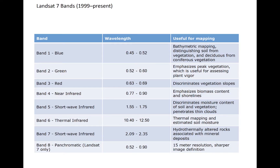Shown are the bands available from Landsat 7, which is also in operation as of 2020. It consists of three visible bands, a near-IR band, two shortwave IR bands, one thermal infrared band, and a panchromatic shortwave band.